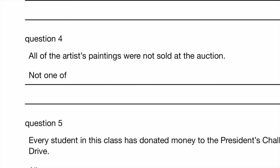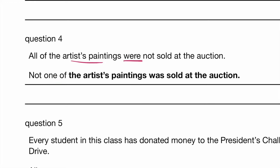Question 4: All is plural, especially when dealing with countable nouns. We are using the past tense here and the plural form — all the paintings were. That's plural. Not sold at the auction. So next, 'not one of' — you notice 'one of'? That is singular. So: not one of the artist's paintings was sold. Notice we are using the past tense still. We changed 'were' (plural) to 'was' (singular). Why? Because 'not one of the artist's paintings' is singular — singular subject takes on a singular verb.